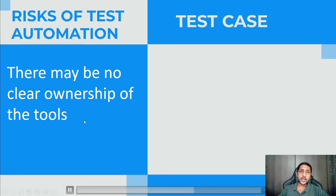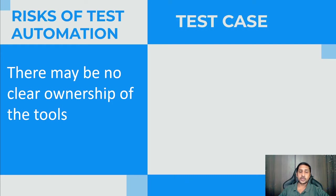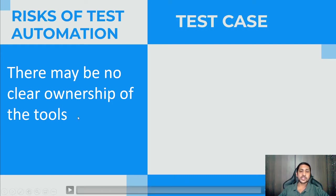There may be no clear ownership of the tool. The tool is there but no one is responsible for owning or maintaining it. Maintenance is one of the biggest challenges with automation projects and tools, so if there is no ownership and something goes wrong, there is no one to contact.